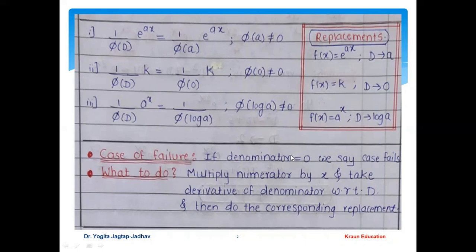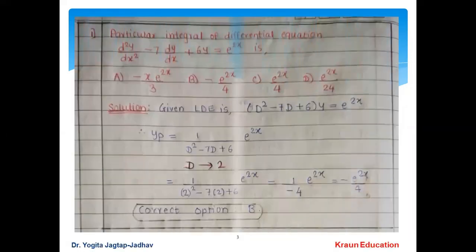When you get 0 in the denominator, we call this a case of failure. In that case, you must multiply the numerator by x and take the derivative of the denominator with respect to D, then do the corresponding replacement.